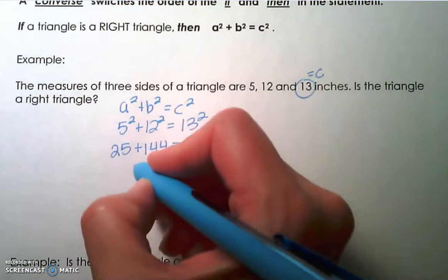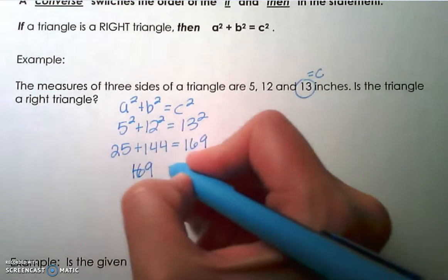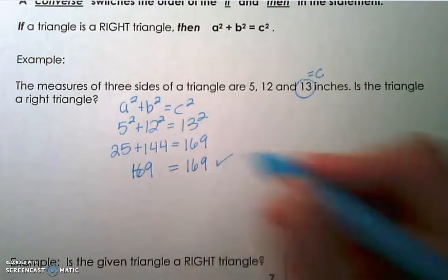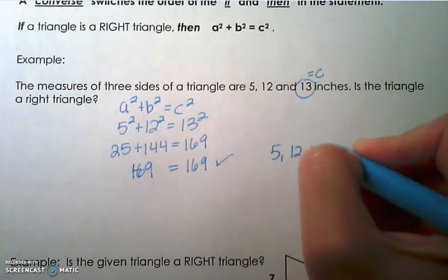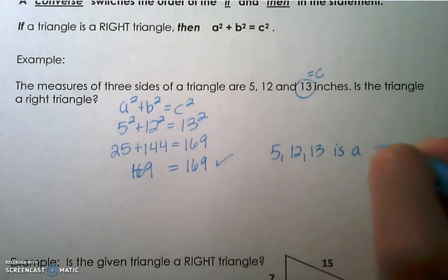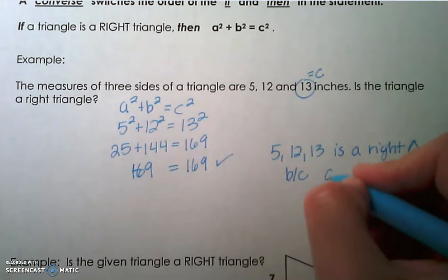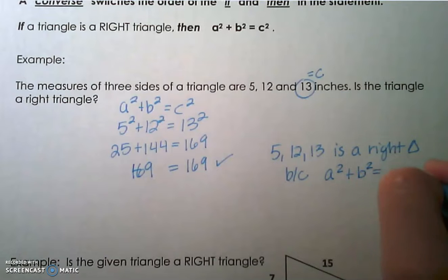When you add 25 and 144, you get 169, which is equal to 13 squared. Because this statement is true, we can say that 5, 12, 13 is a right triangle because when I substitute those values into Pythagorean theorem, it is a true statement.